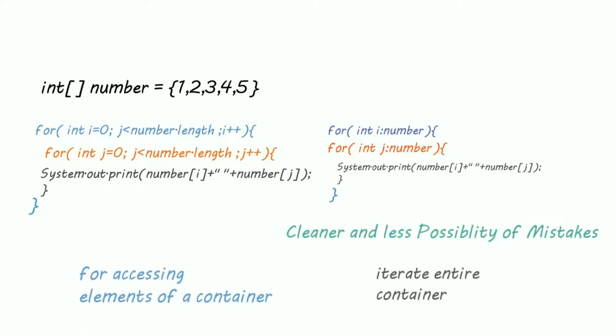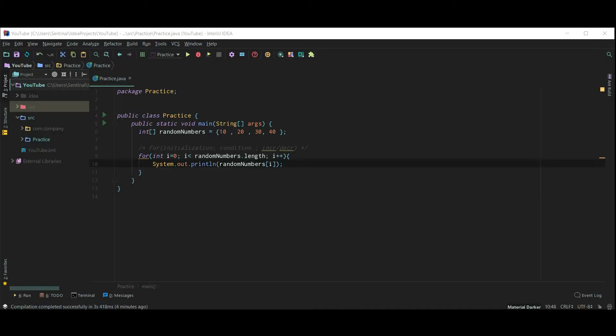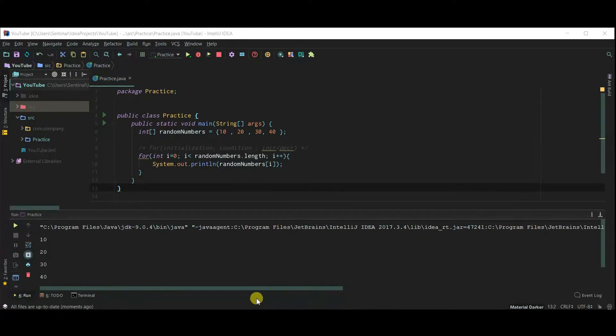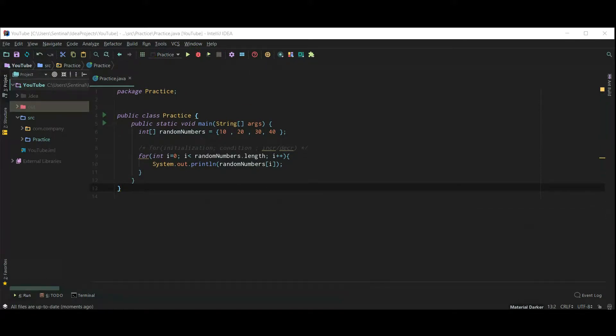Let's quickly revise what we just learned. So syntax of for is easy: initialization, condition, and increment or decrement. Here I am simply printing this array using our for loop, and our array is printed.